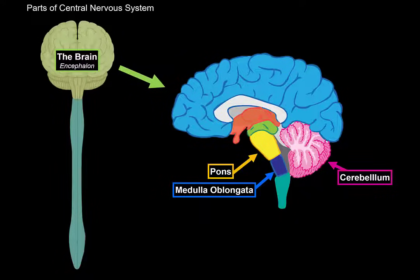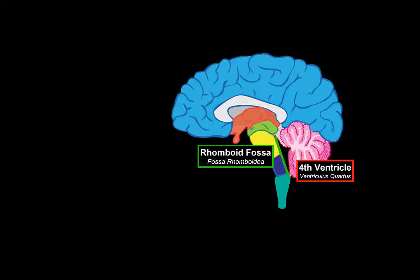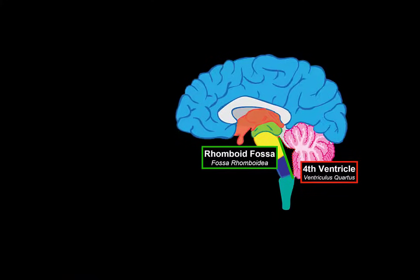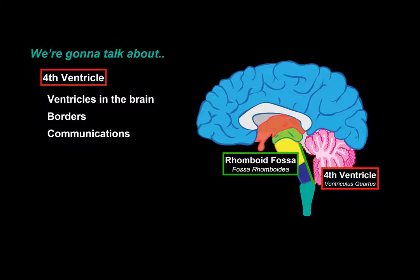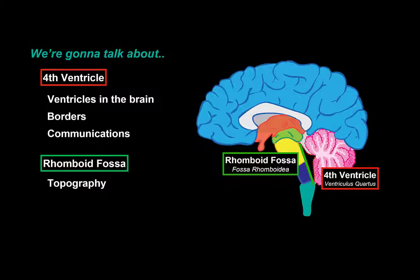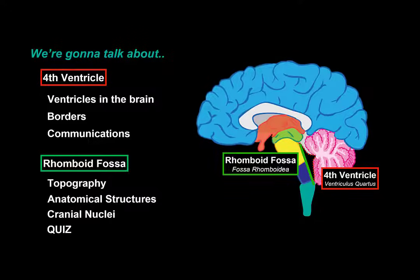Our focus in this video is the space between these three structures called the fourth ventricle, and the base of the fourth ventricle called the rhomboid fossa. In this video, we'll first go through all the ventricles in the brain, then cover the borders and communications of the fourth ventricle, the topography of the rhomboid fossa, the anatomical structures, and the cranial nuclei and cranial nerves associated with the rhomboid fossa. There's also a little quiz at the end which might help you memorize.